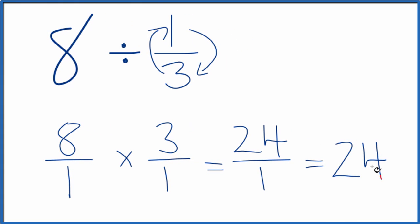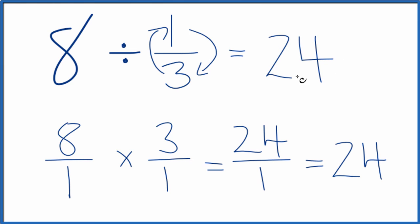So in answer to our question, 8 divided by 1 third equals 24. If you multiply 24 times 1 third, you'll get 8 — so we know we did this correctly.